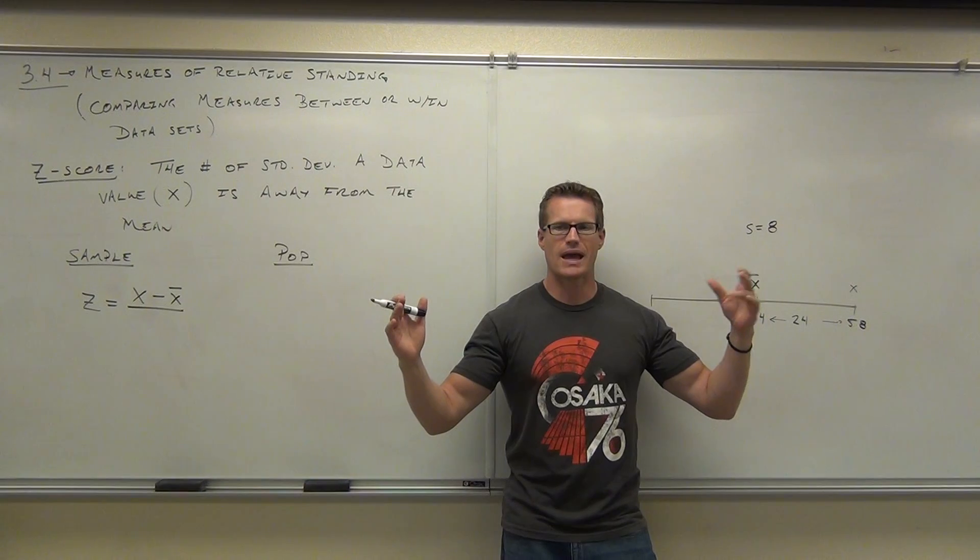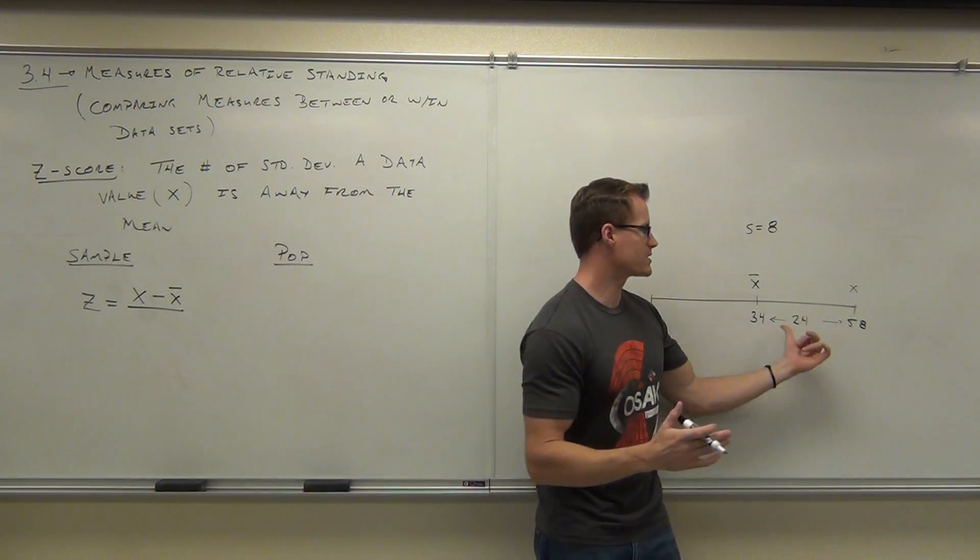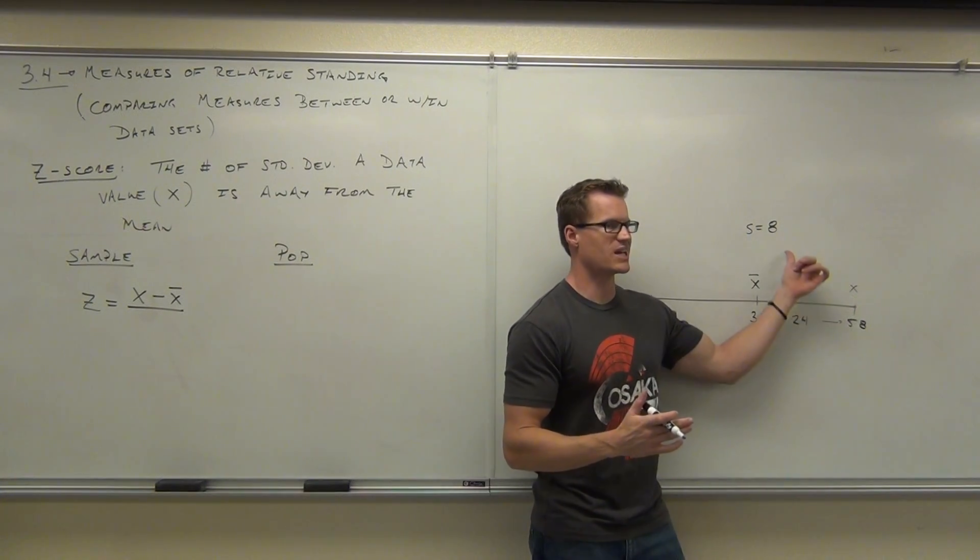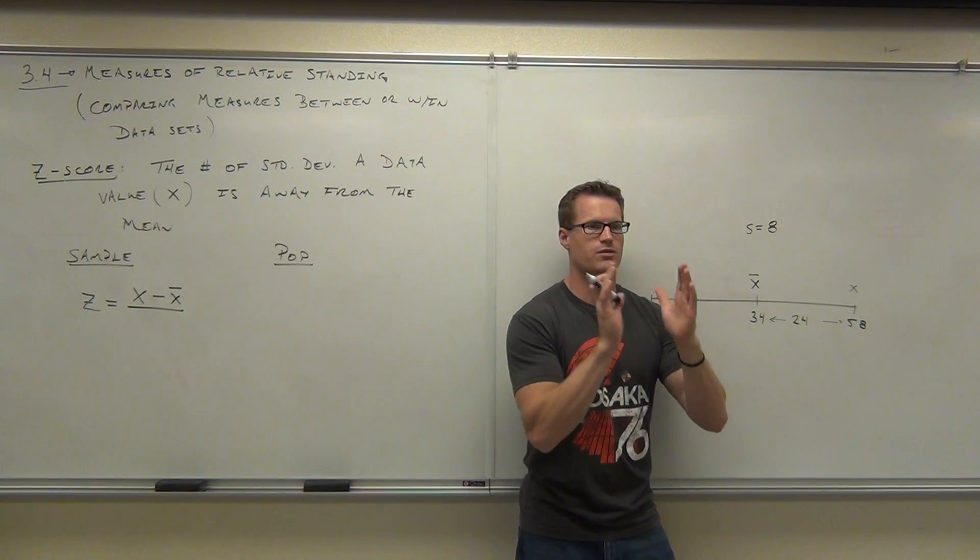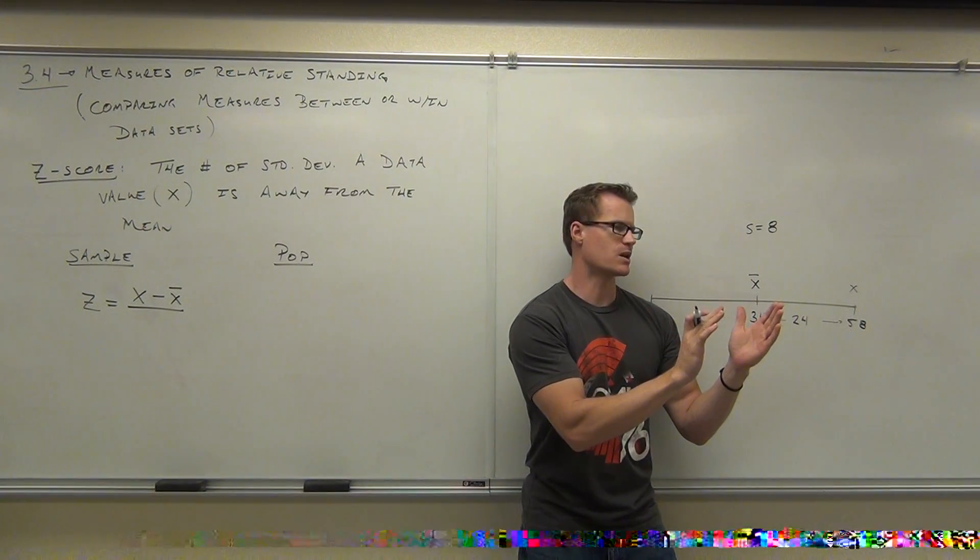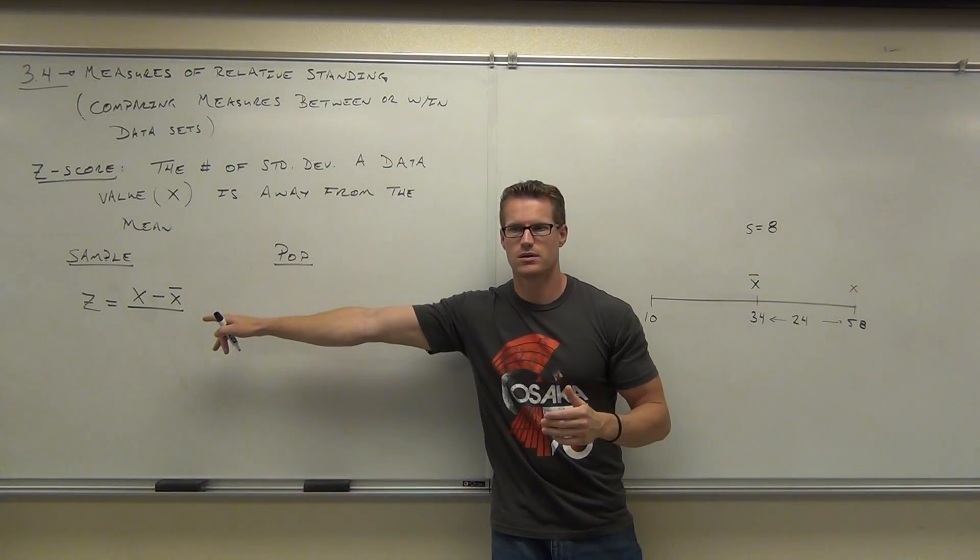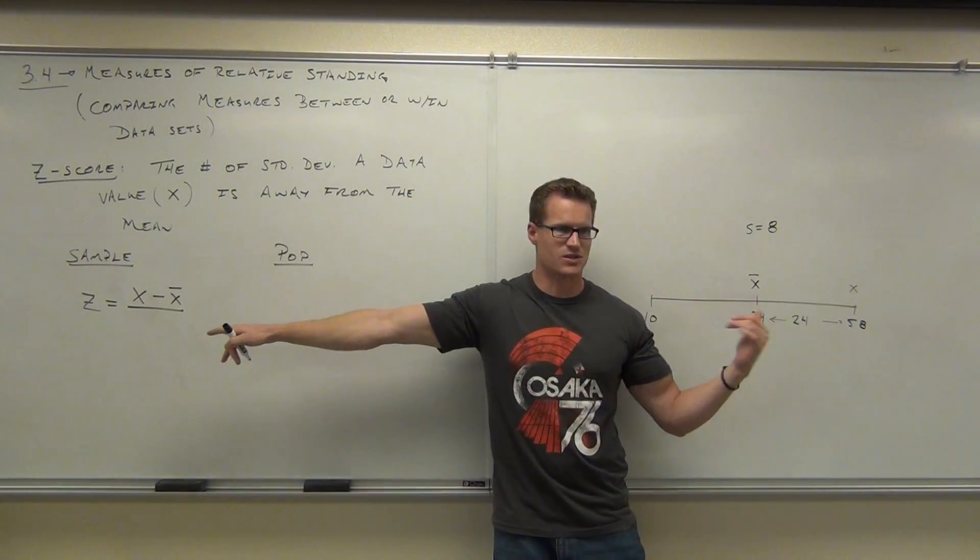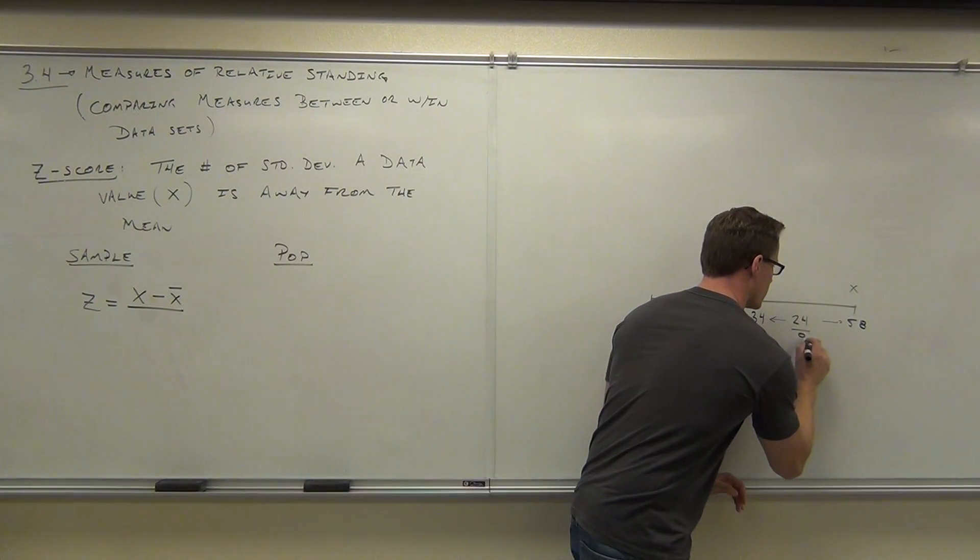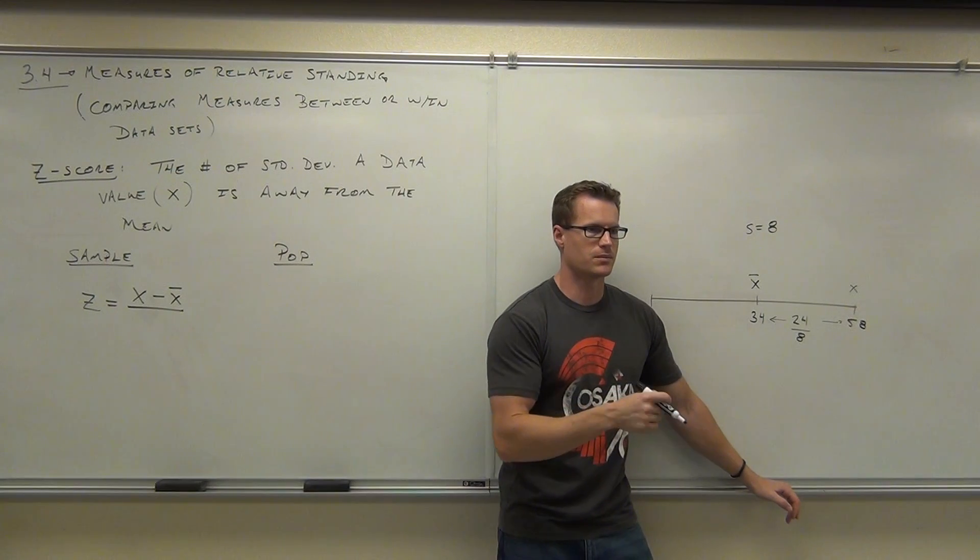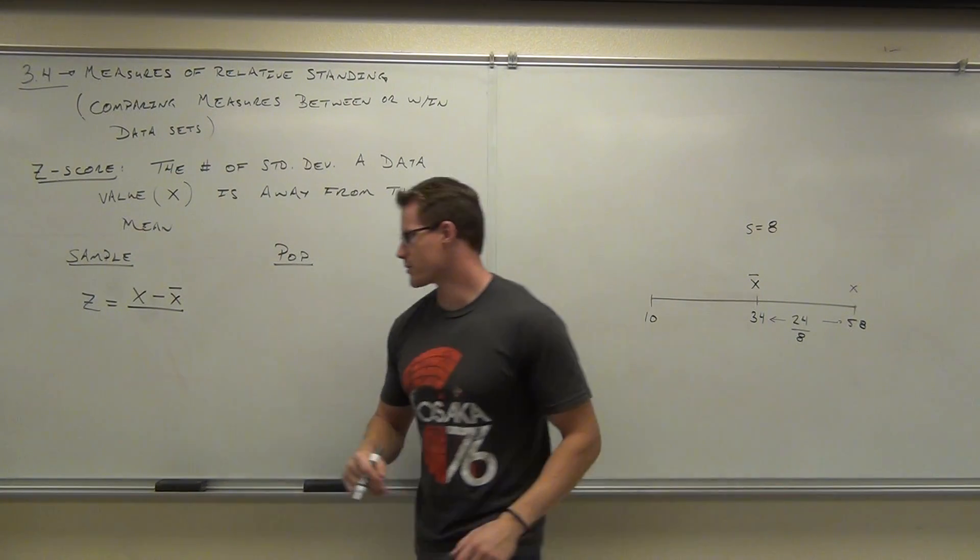We're taking the x value, which in this case is 58. We're subtracting our mean, which in this case is 34, that gives us 24. That's the distance between those two numbers. Now, how do you calculate how many standard deviations fit in there? That's a division problem. This is the distance. The standard deviation is 8. How many times does 8 go into 24? That gives me the number of standard deviations it is away. So we divide by the standard deviation. We divide by 8, and we get 3.